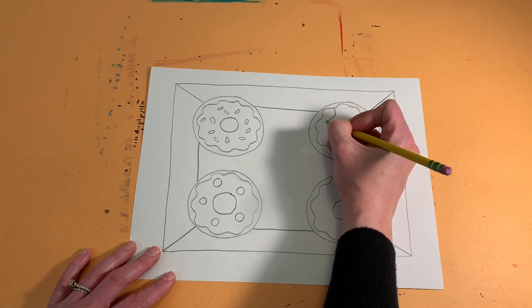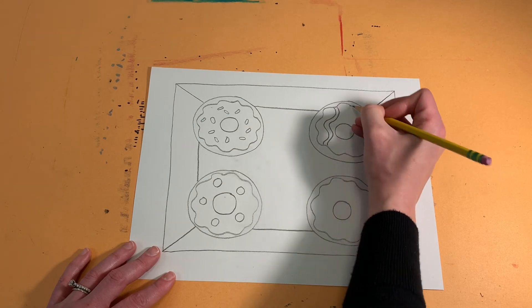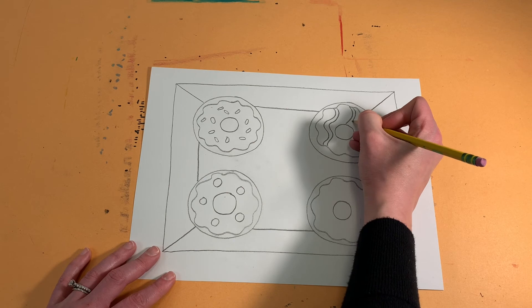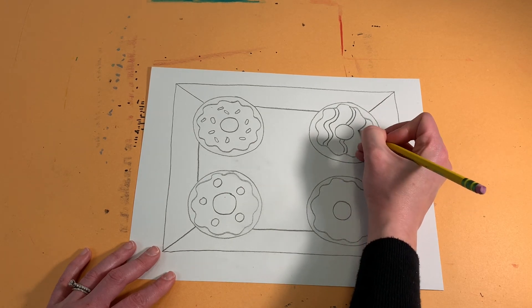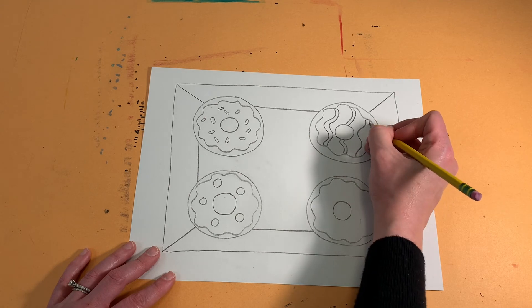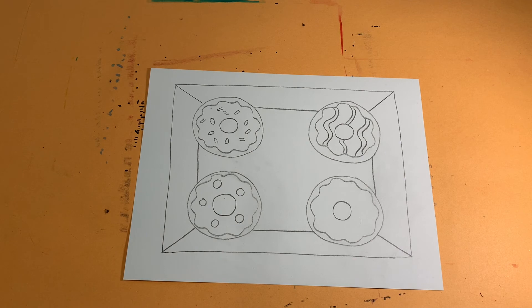And then maybe this one has like a swirled flavor on top with its frosting. So I'll add some wavy parallel lines. Parallel lines are two lines that are matching lines that follow the same path, but they don't touch. There we go. Those look great.